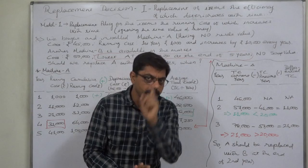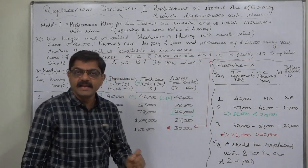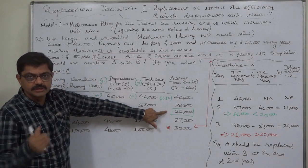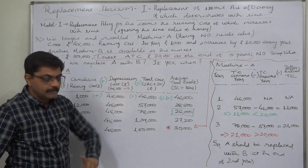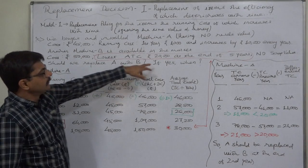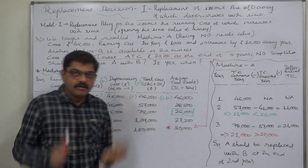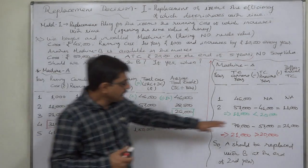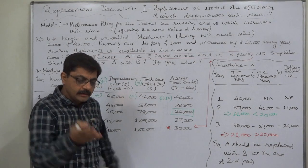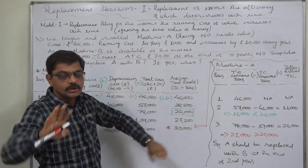With Machine B available at a lowest average total cost of Rs. 20,000, we should replace Machine A with B at the beginning of the third year — i.e., at the end of the second year. So there are two scenarios: if there is no Machine B, replace A with a new A at the end of year 3. But if Machine B is available, replace A with B at the end of year 2, then use B for five years — a total span of seven years.